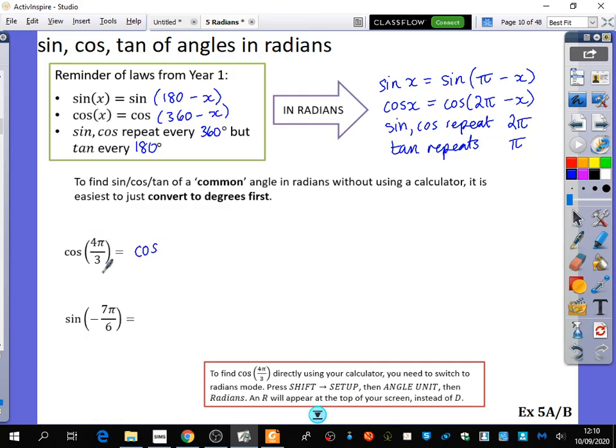What is 4π/3 in degrees? It is 240, yeah. It's the cos of 240. Now I can use these rules. So the cos of 240 is the same as 360 minus 240, which is the cos of 120.